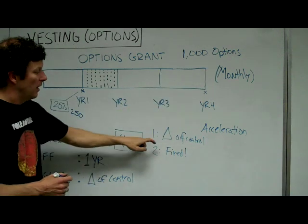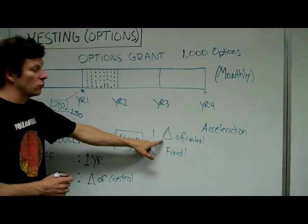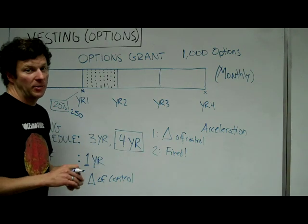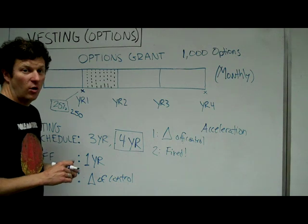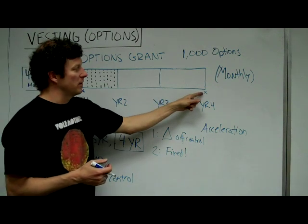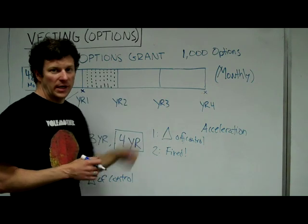The most common would be a change of control. So if the company gets sold or IPOs or some major event happens where there's a change of control, assuming that's a good event, almost always if you have a trigger built into your options grant, it will accelerate your vesting.